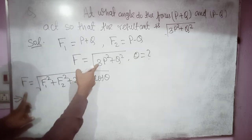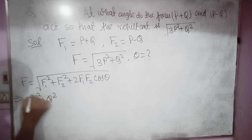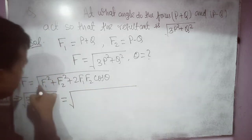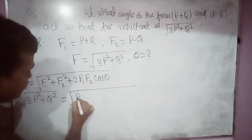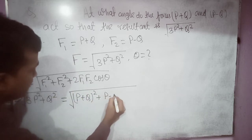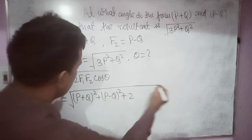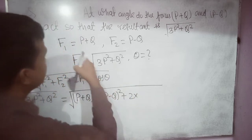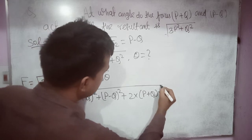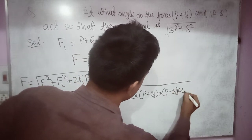F has the value √(3P² + Q²). It is equal to: F1 has value (P + Q) squared, plus F2 has value (P − Q) squared, plus 2·F1·F2, where F1 is (P + Q) and F2 is (P − Q), times cos θ.